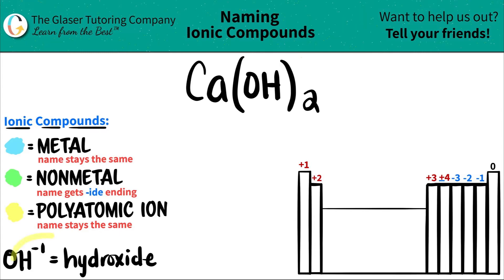So in this case, I wrote down the one that we're going to be using here. OH, right? It's always a negative one charge. It always gains one electron. And that polyatomic is always called hydroxide.